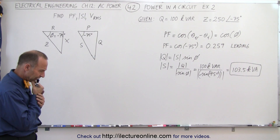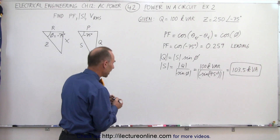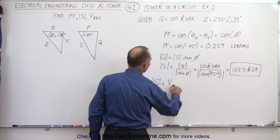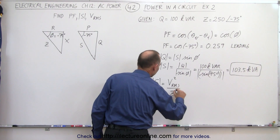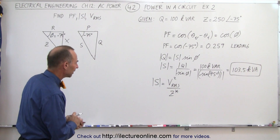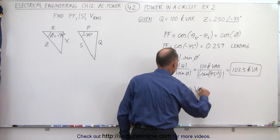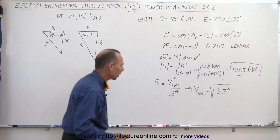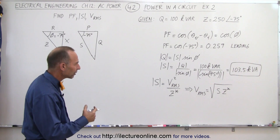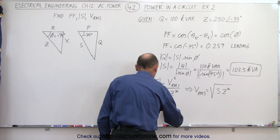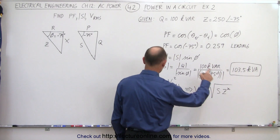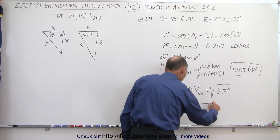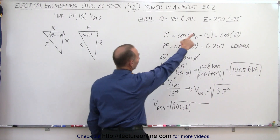Finally, we want V-RMS. We know that the magnitude of the complex power is equal to V-RMS squared divided by the complex conjugate of the impedance. That implies V-RMS equals the square root of S times Z complex conjugate. Since we're looking for the magnitude, we say V-RMS equals the square root of S — which is 103.5 kilo — multiplied by Z, which is 250 ohms.